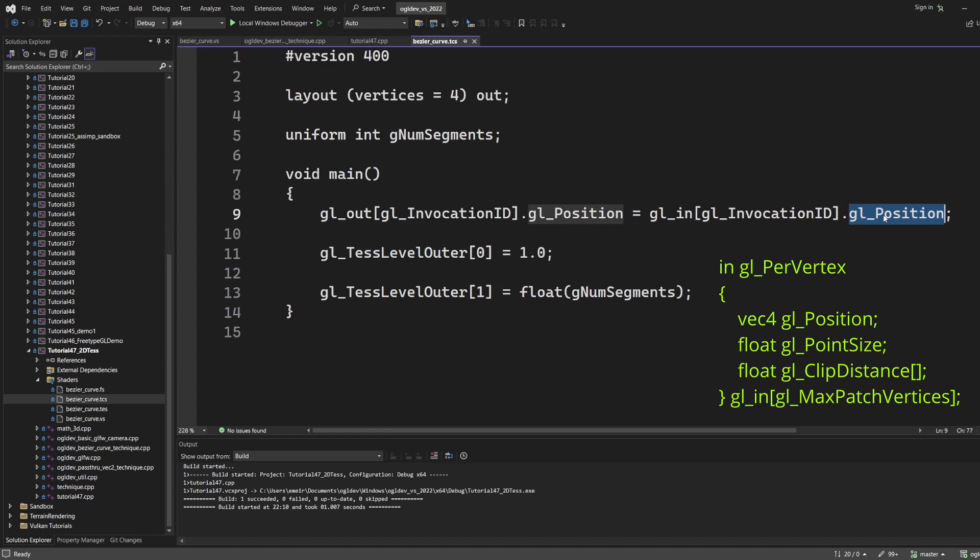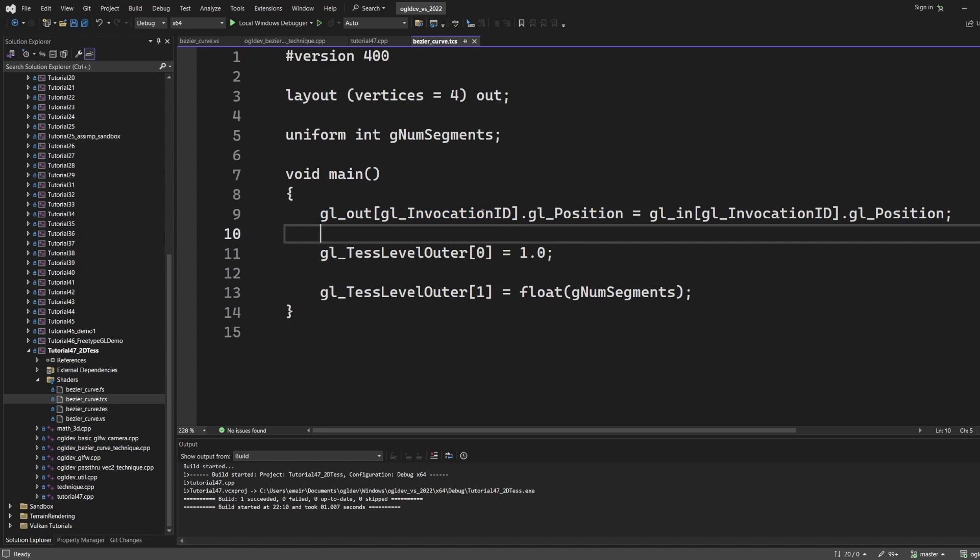We have the gl_in and gl_out arrays for the input and output respectively. The two arrays have the same structure with the position, the point size and clip distance as members. We are only interested in the position so this is what we copy. Each invocation of the TCS can access the entire gl_in array, all the input vertices, but it can only write to a single element in the output array, the one that corresponds to the current TCS invocation. So gl_InvocationID runs from 0 to the number of output vertices minus 1. We have completed the per-vertex part of the TCS.